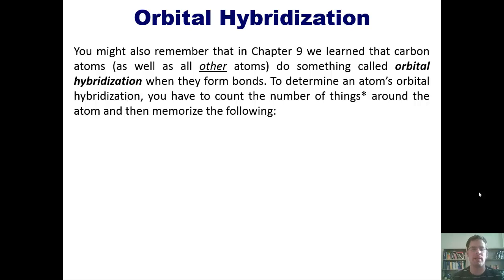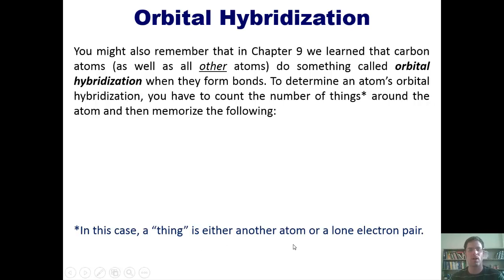All right, so you might also remember that back in Chapter 9, to which, once again, I'll link right here, we learned that carbon atoms, as well as all other atoms, do something called orbital hybridization when they form bonds. Now, to determine an atom's orbital hybridization, you have to count the number of things around the atom and then memorize the following. Now, before I go on, I have to explain that when I use the word things here, what I'm talking about is either another atom or a lone electron pair.